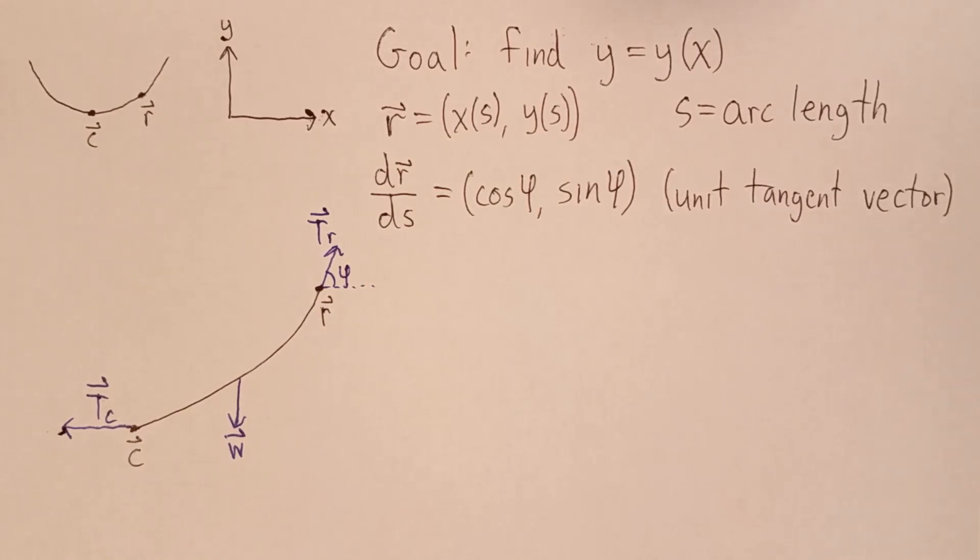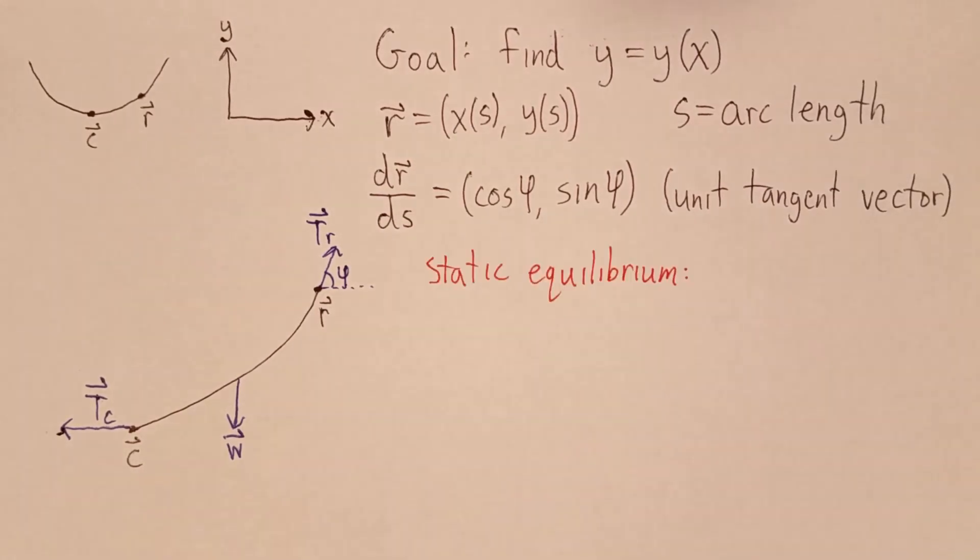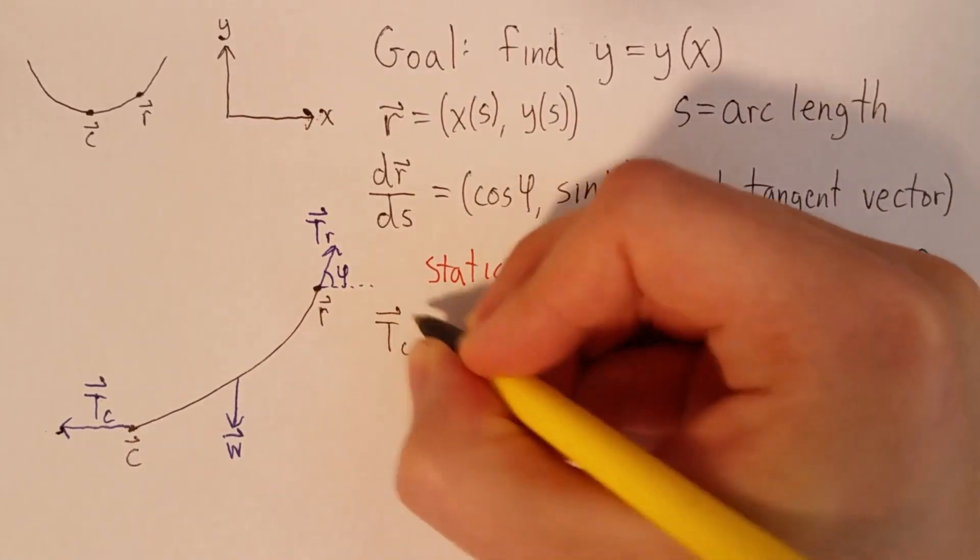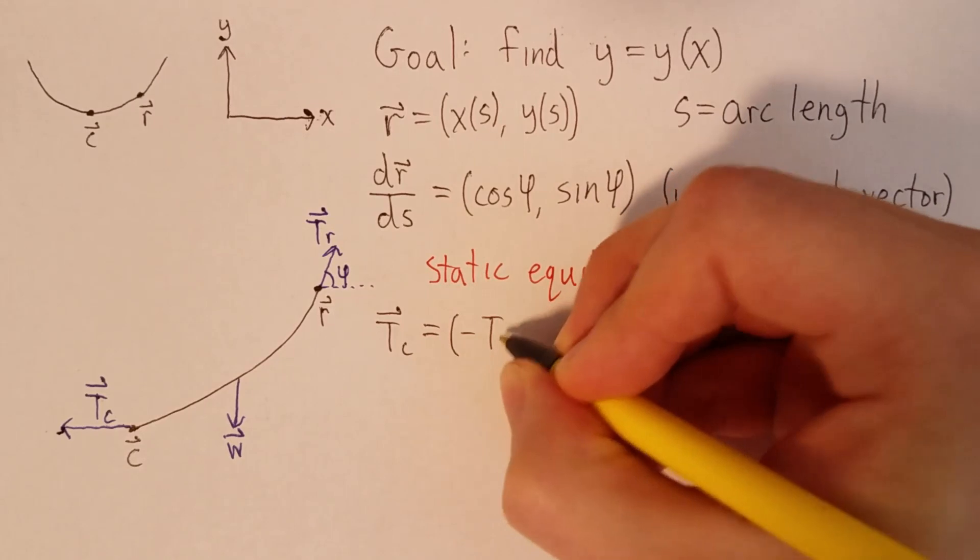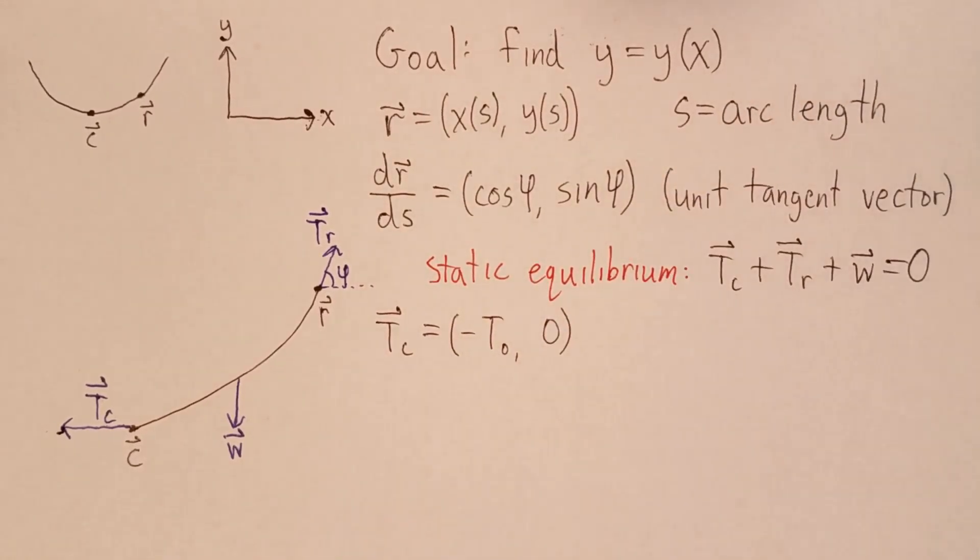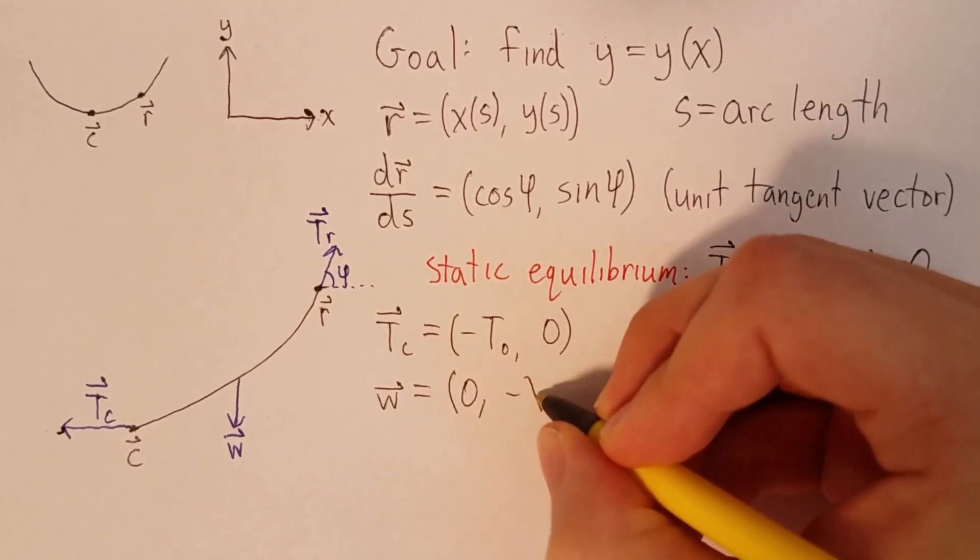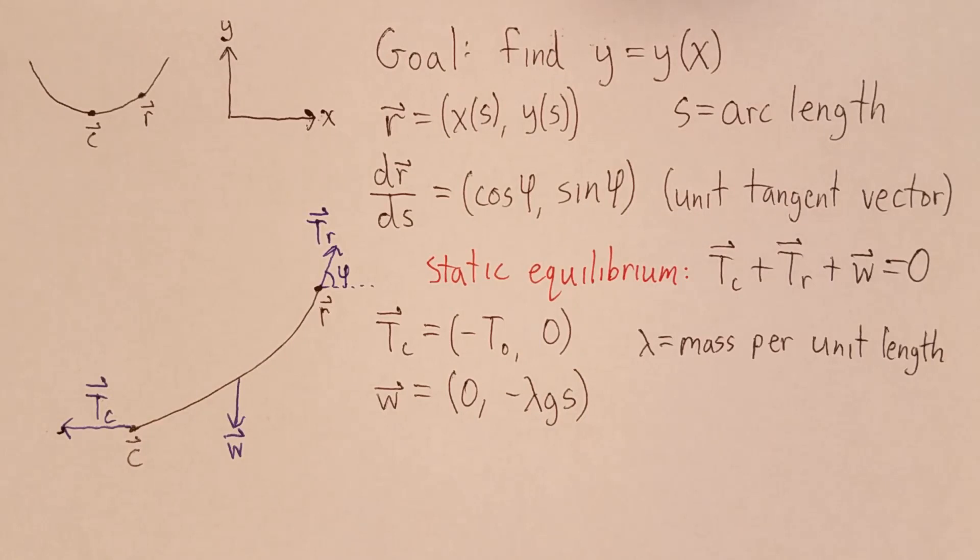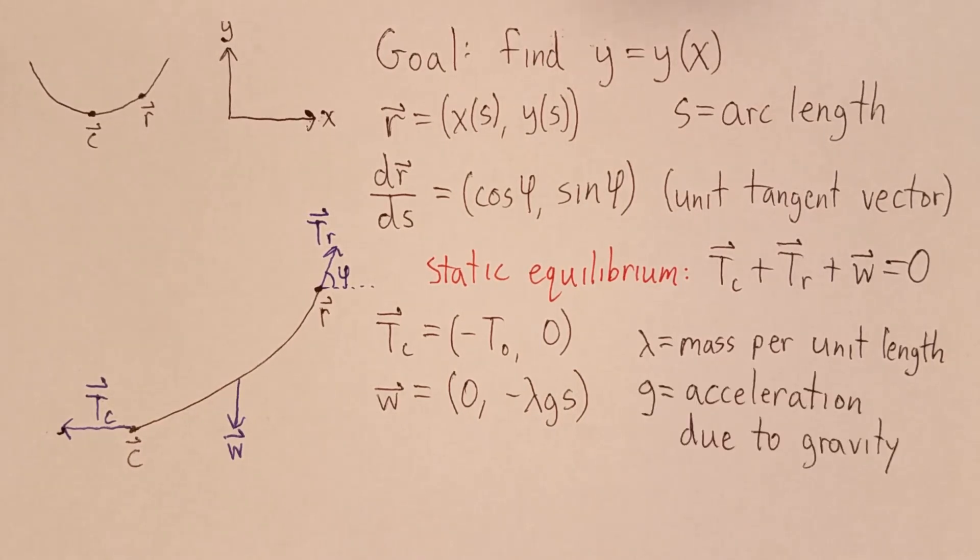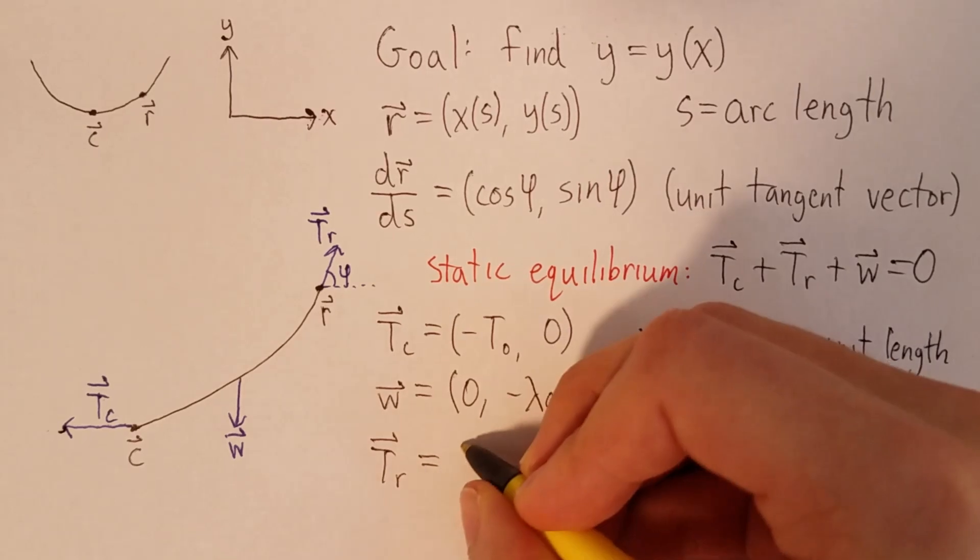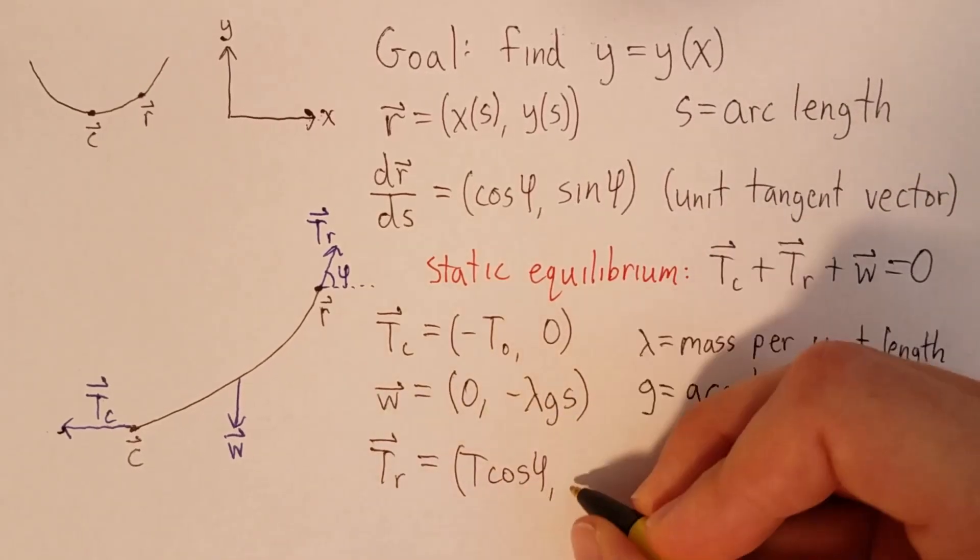So what does it mean for the string to be at rest? It means that it's at static equilibrium. So that means that the sum of the forces acting on the string is zero. So bringing this out into components, we have that Tc is equal to minus T0, where T0 is some positive number. And we can write the weight as zero, minus λgs, where λ is the mass per unit length, and g is the acceleration due to gravity. You can check for yourself that this does give us the right units for a force. And finally, we have that Tr is equal to T cos φ, T sin φ, where T is the magnitude of the tension.